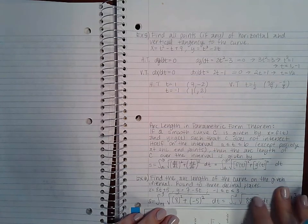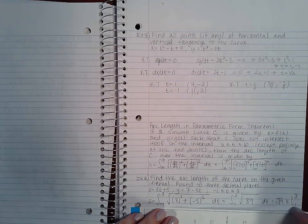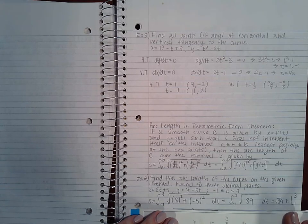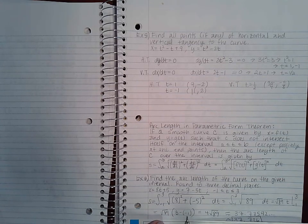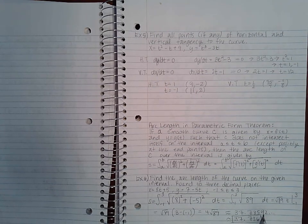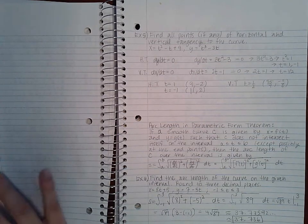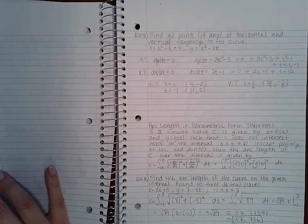Now this is just a constant so when I integrate a constant I get that constant times t which has to be evaluated from negative 1 to 3. If I plug those in I end up with 4 square root of 89 which when rounded to three decimal places is 37.736.